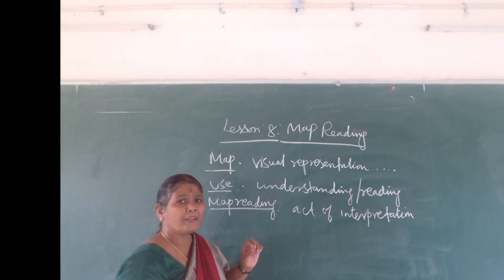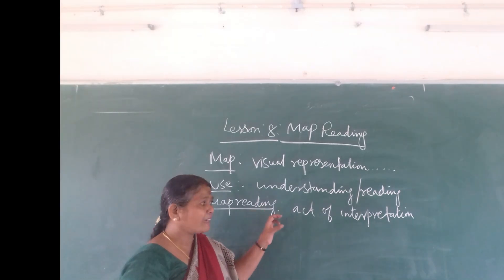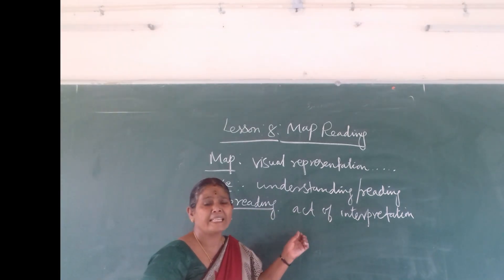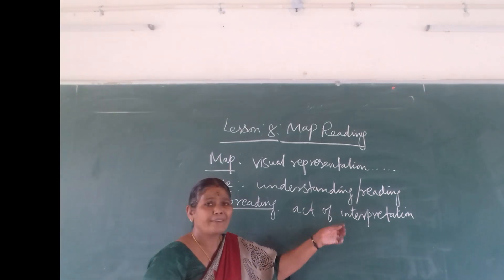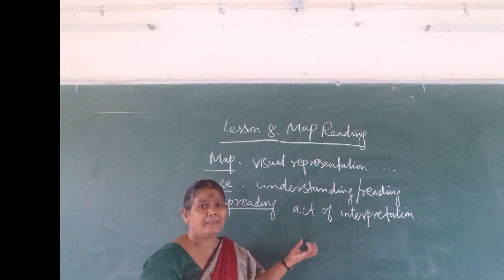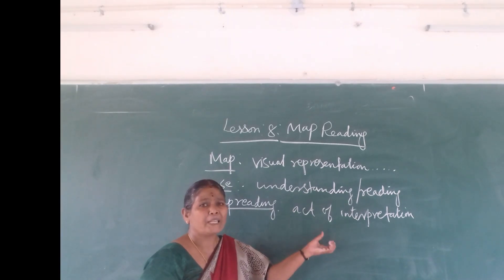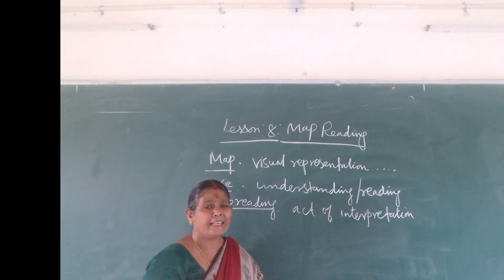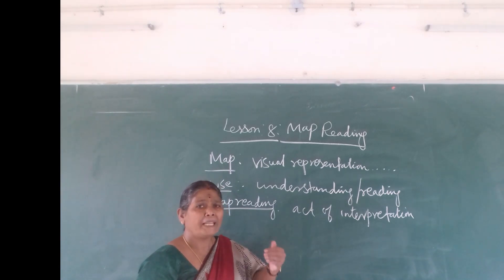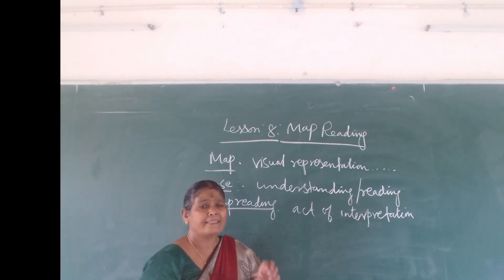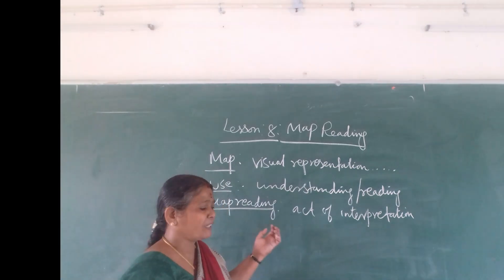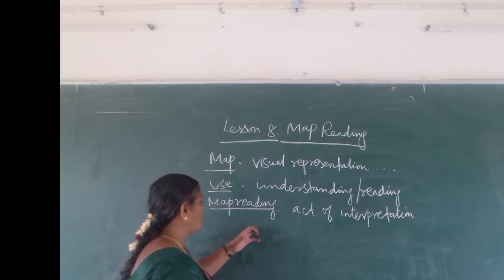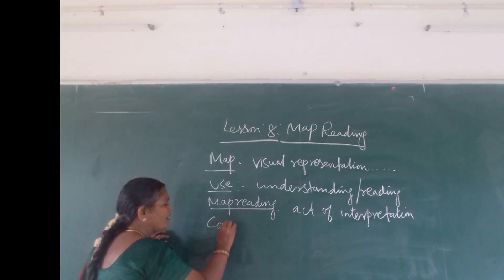Map reading — how to read: it is the act of interpreting and reading the actual information of geographic details and specific information of a particular area or entire area, by processing the symbolized information shown on the map. Now children, we are going to talk about the basic components of a map.